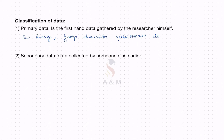Whereas secondary data means the data collected by someone else earlier. You just refer to it and it is not collected by you. For example, government publications, websites, books, journals, etc.